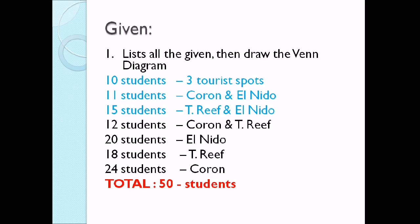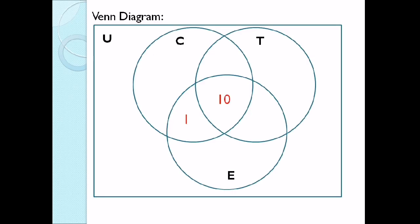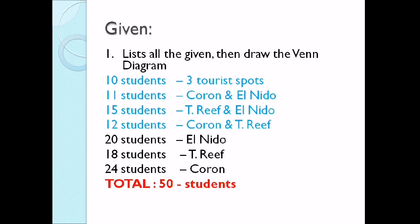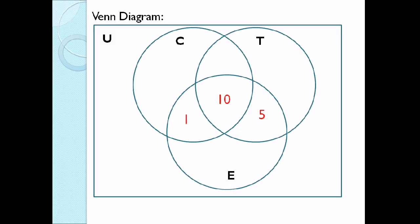Next, 15 students Tubbataha and El Nido. So T intersection E. Doon tayo sa may circle T tsaka doon sa circle na may E. So ang ilalagay natin ay 5, which is 15 minus 10. So ang ilalagay natin doon ay 5. Next, 12 students for Coron and Tubbataha. Doon tayo sa dalawang circle sa taas, yung C at T. So that is C intersection T.